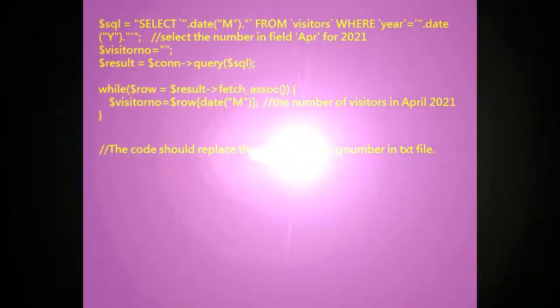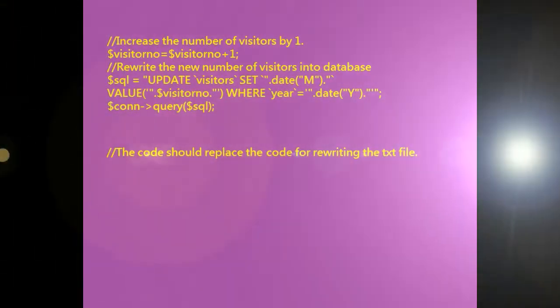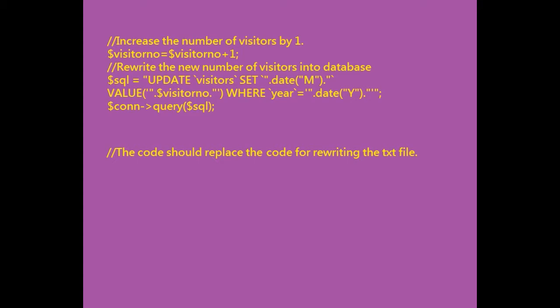Second, you should use SELECT to find the number of visitors for this month in the table. While a visitor visits your website, the number of visitors will be read from the table and increased by one. Finally, use UPDATE to revise the value into the table. It is very easy to record in the database.